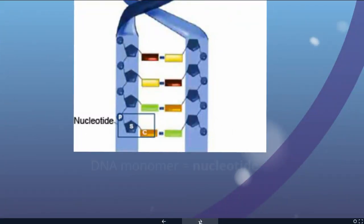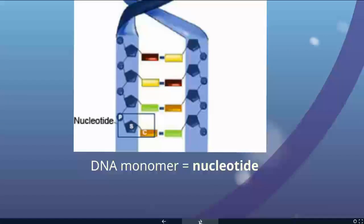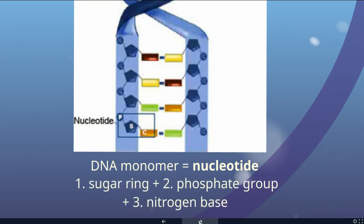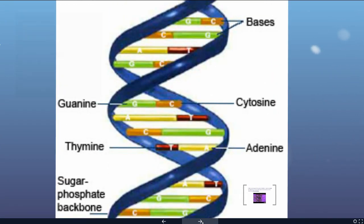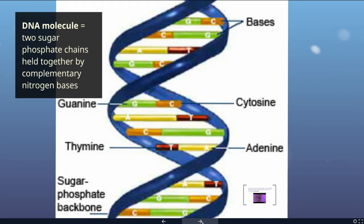Looking at the actual structure of DNA, the monomer of DNA is a nucleotide. A nucleotide consists of a sugar ring, a phosphate group, and a nitrogen base. A series of these are attached to each other to form our complex biomolecule. The actual molecule is made of sugar phosphates making the backbone of each side of the double helix.